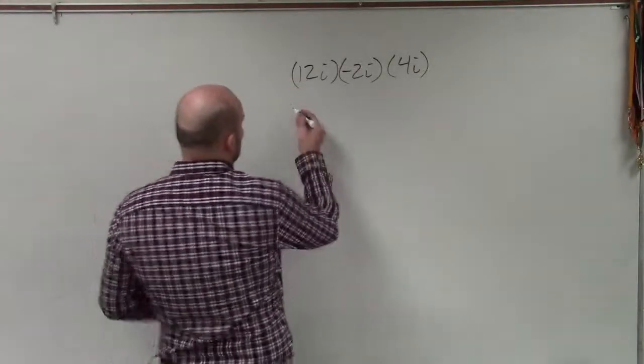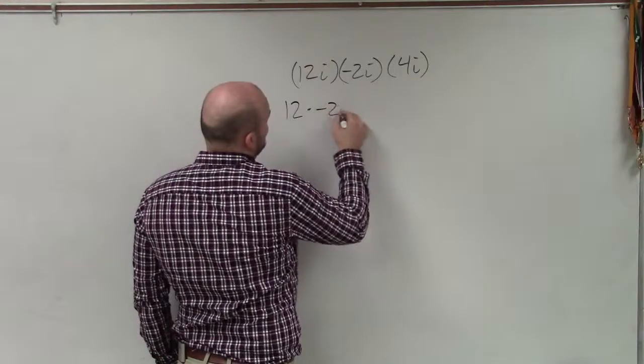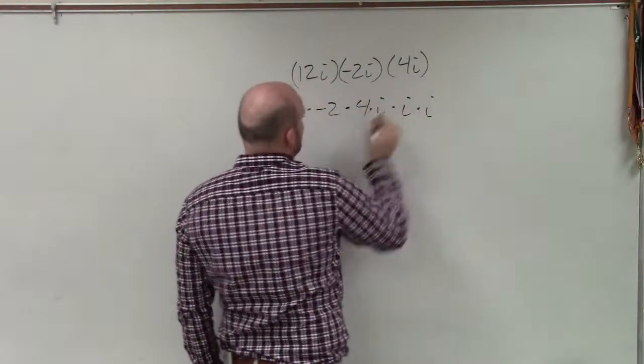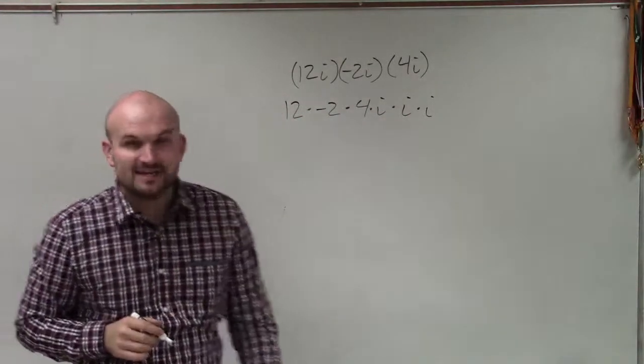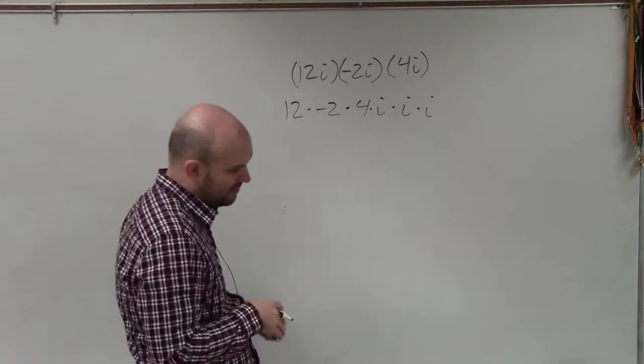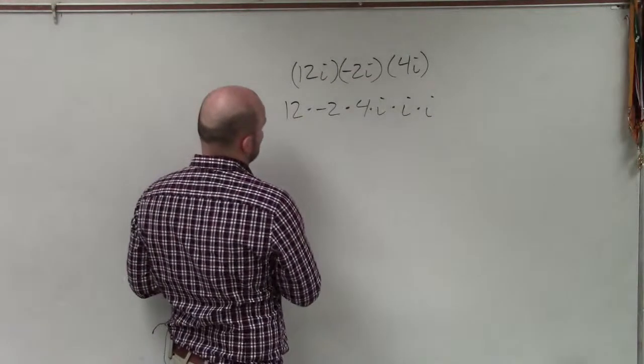So I'm basically going to multiply 12 times negative 2 times 4, and then I'm going to multiply i times i times i. So 12 times 2 is negative 24. Times 4 would be negative 24. Negative 48 would be negative 96.